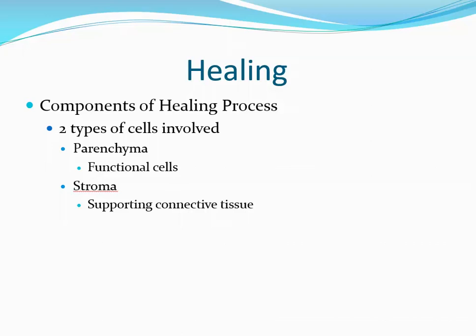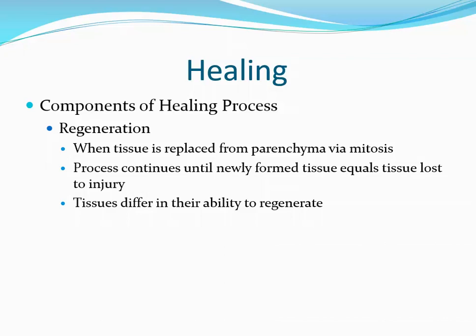When an injury occurs in the skin, if healing involves only the parenchymal cells, they know how to replace and become new epithelial cells — no scar will be seen. But if the stroma or supporting connective tissue is involved, those cells don't know how to make epithelial cells, and this is when a scar can result. Regeneration refers to when tissue is replaced from parenchymal cells via mitosis, continuing until newly formed tissue equals the tissue that was lost. No scar would be seen in this process.